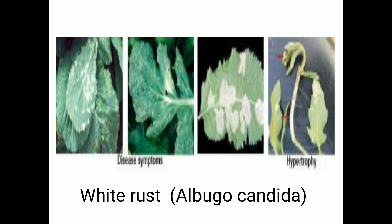In the case of local symptoms, pustules or sori develop on leaves and stem. The sori merge to form large patches, as indicated here. If the sori increase in size, the host epidermis ruptures after the maturity of those pustules.